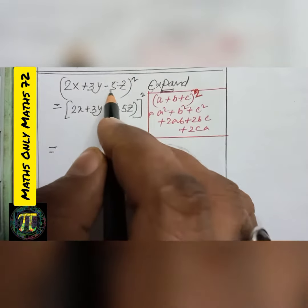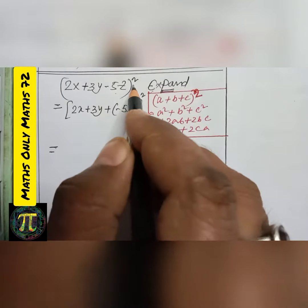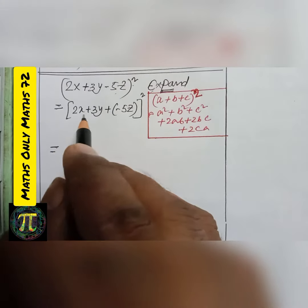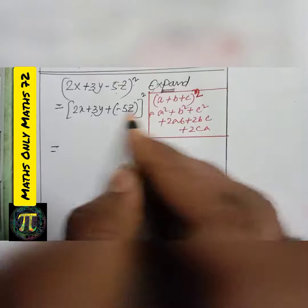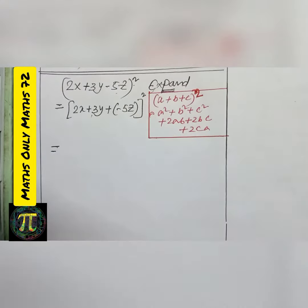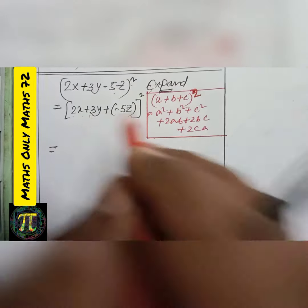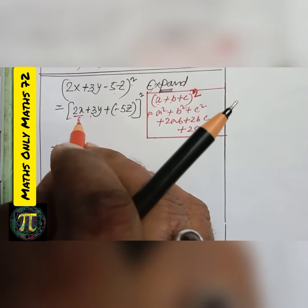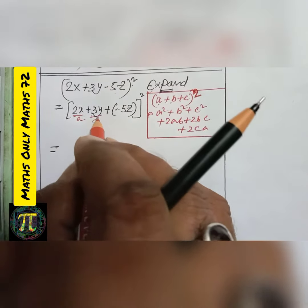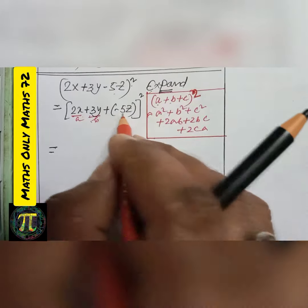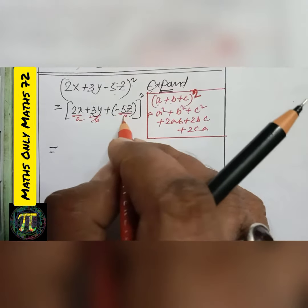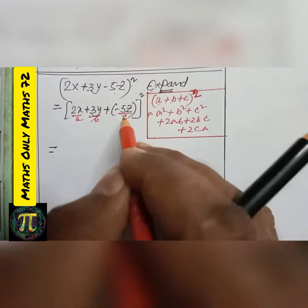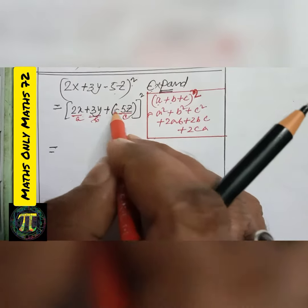Expand (2x + 3y − 5z) whole square. We can write it as (2x + 3y + (−5z)) whole square. This is in the form of (a + b + c) whole square, where 2x is a, 3y is b, and minus 5z is c.